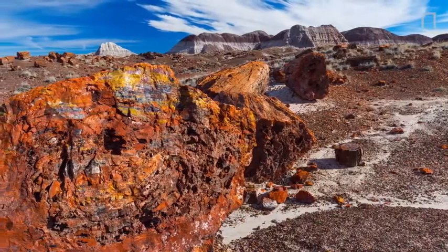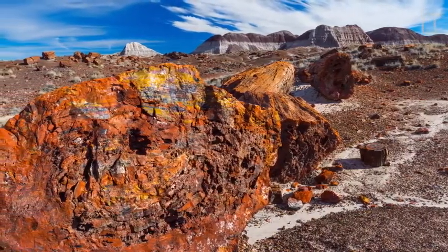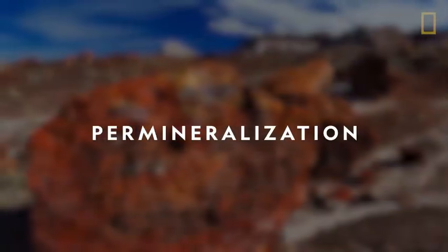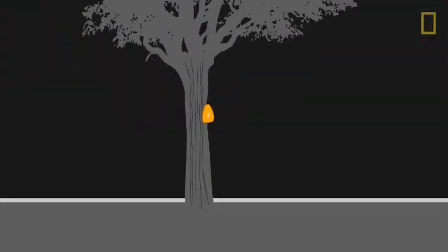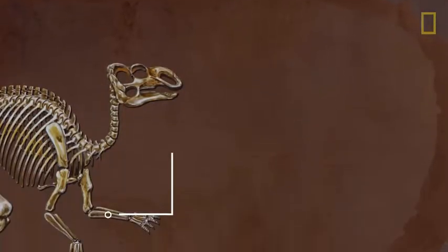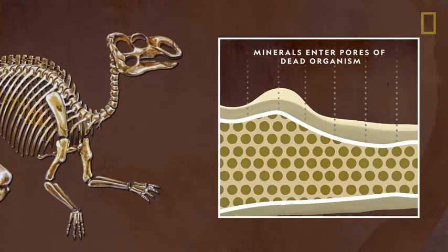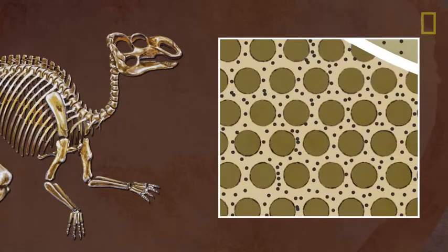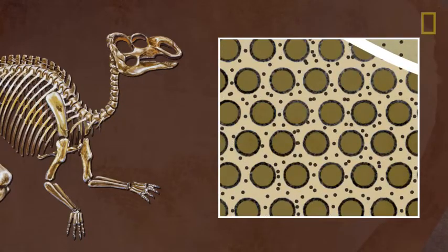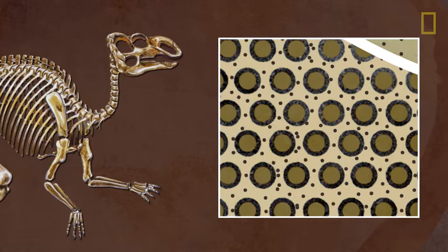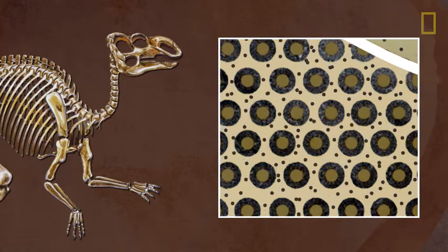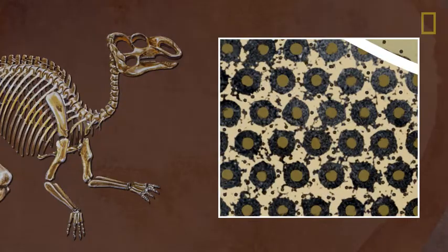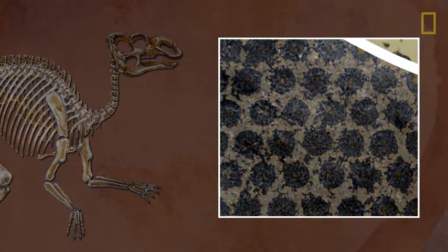But one of the most common types of fossilization that changes a specimen is called permineralization. Permineralization begins when minerals from water or the ground enter the pores of dead plant or animal material. Over time, the minerals attach themselves, clinging onto cellular walls and building a crystalline network in the empty cavities.